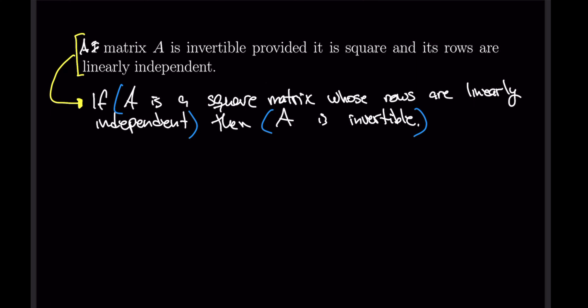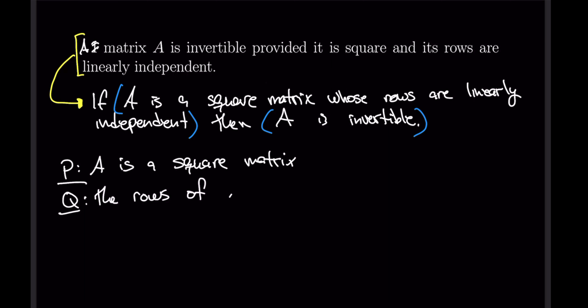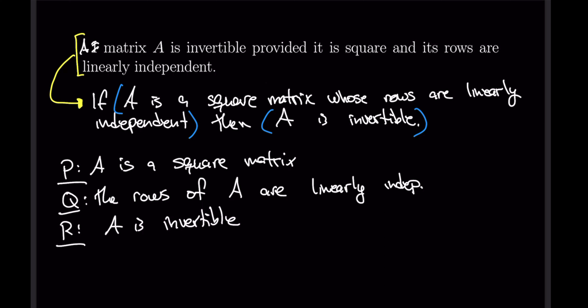So we need three components. Let p be 'A is a square matrix,' let r be 'A is invertible,' and let the third statement cover linear independence. With that prep work, the symbolic form is (p ∧ q) → r.